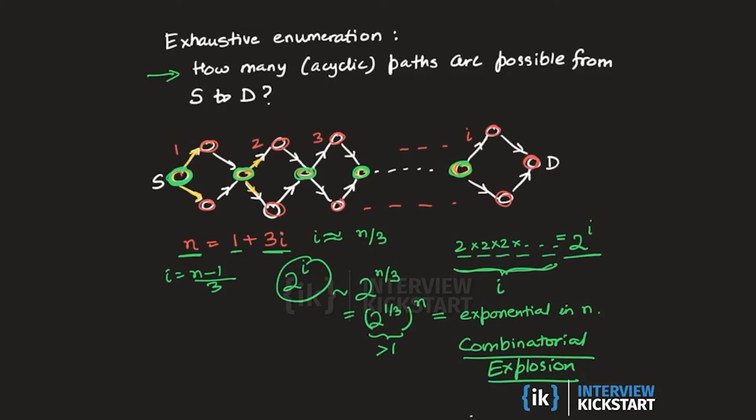And our goal is to pick that particular permutation, that specific path from S to D, whose total cost is minimum. So we want to pick the best possible permutation which has the least cost. And that identifies this problem class as combinatorial optimization.